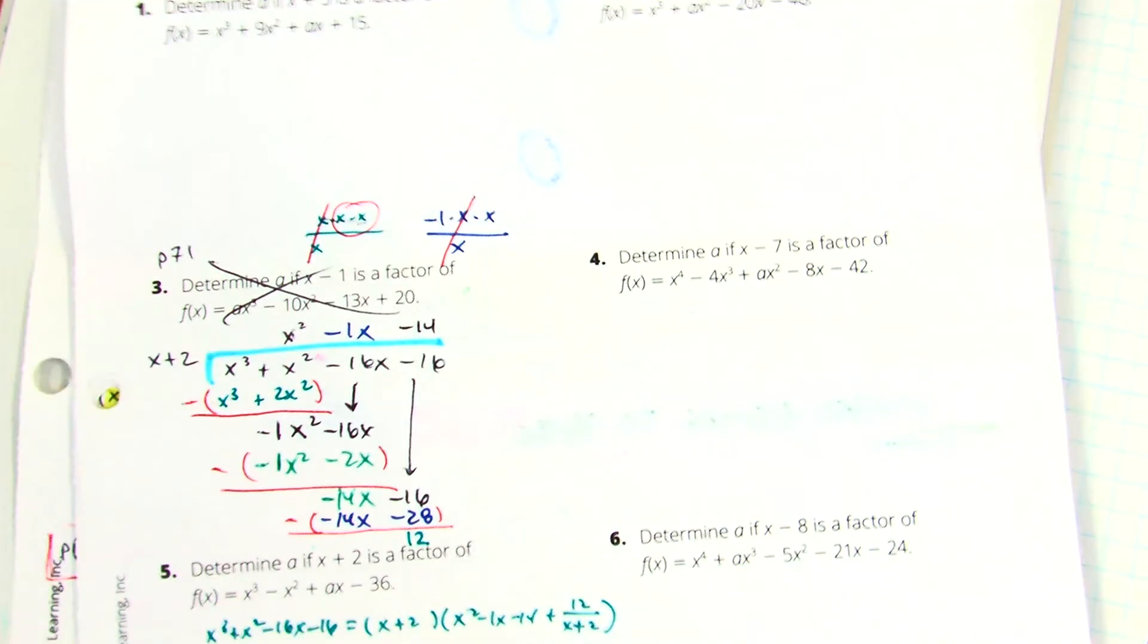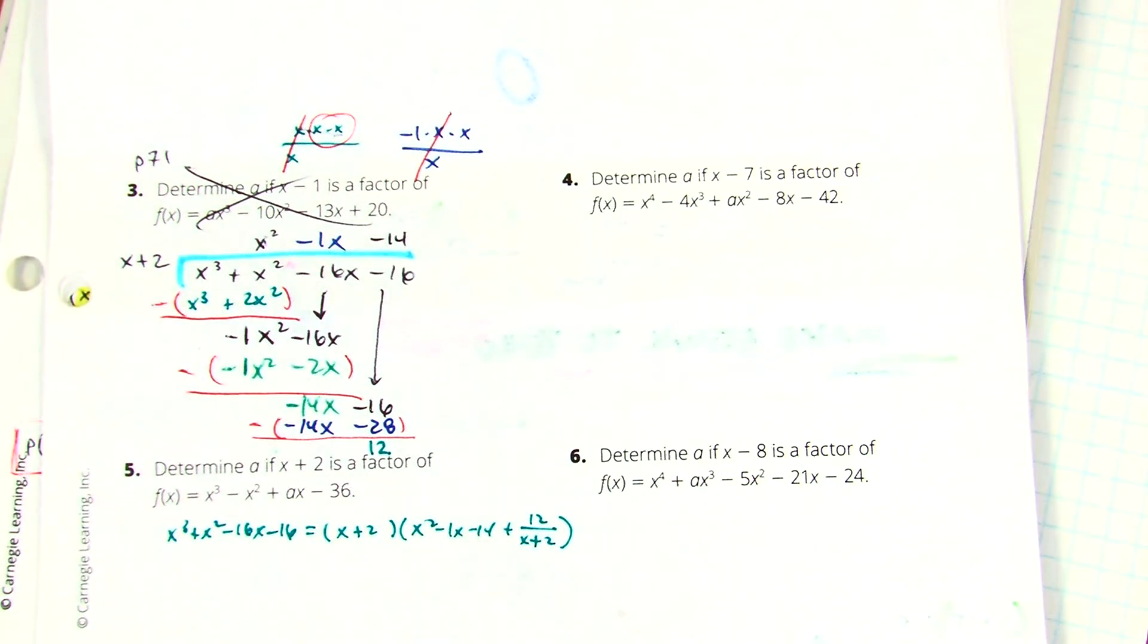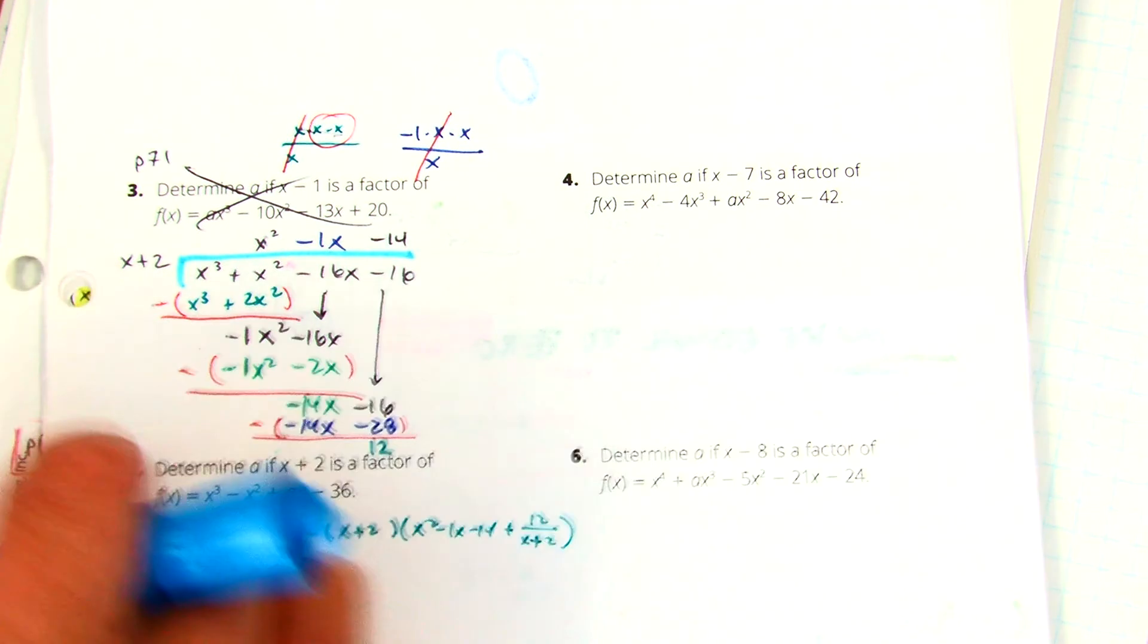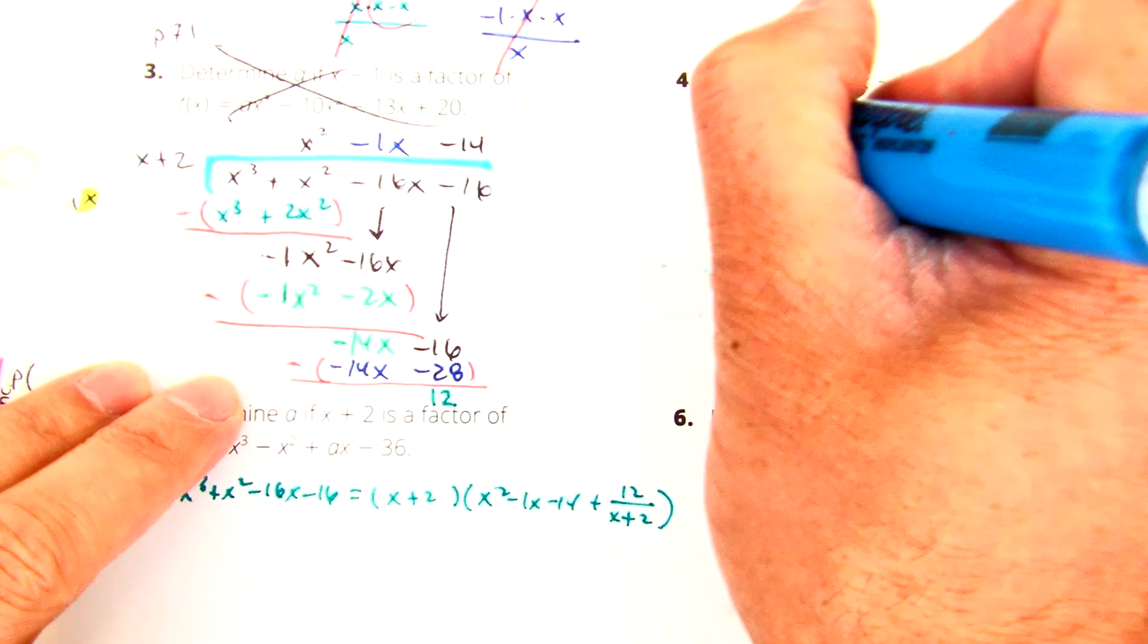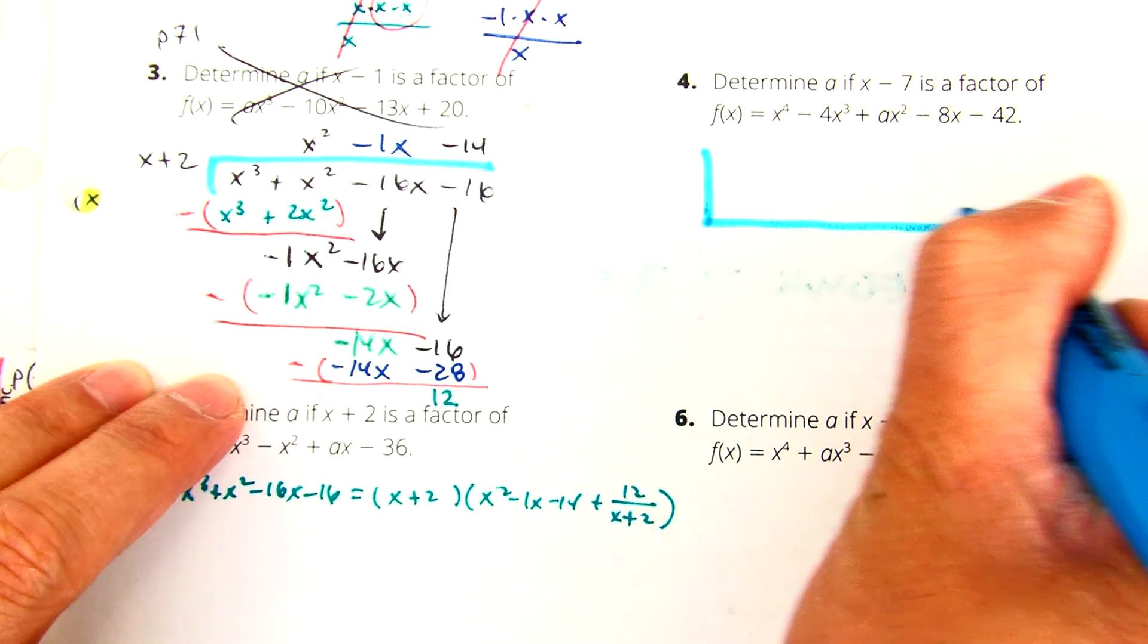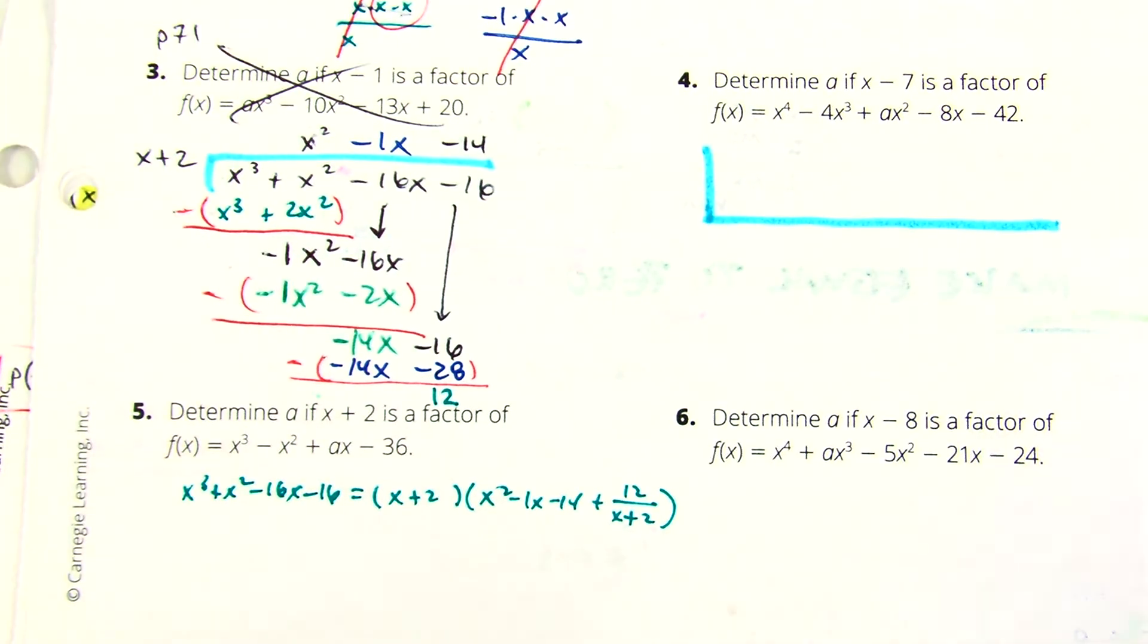Alright, so for synthetic division on the same exact problem that we just did, if you didn't finish writing those steps, they're right there on the board. I'm going to take my division bar and I'm now going to flip it to look the other way now. And looking at your formula sheet, the very first thing we need to do is...